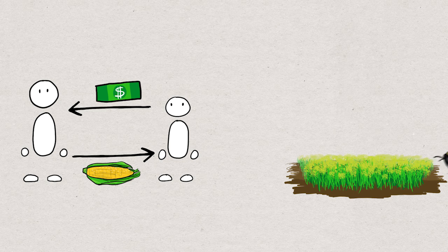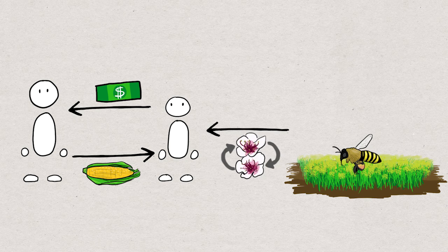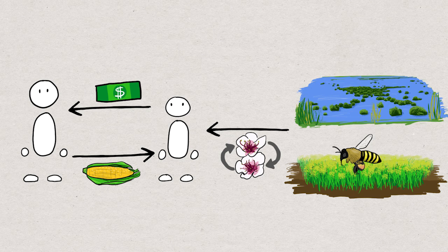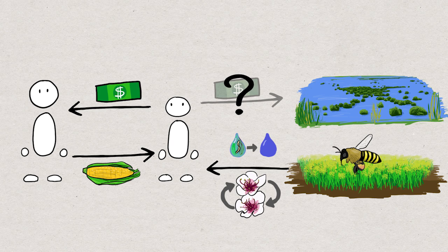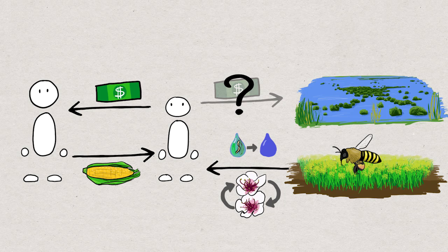For example the pollination services provided by natural pollinators, allowing certain crops to make fruits nuts or seeds. Or how about the role of a wetland in water purification. The way people trade for things is the way we measure how much people value them. So when things aren't traded we don't know how much people value them. Or at least it takes some additional work to find out. Which is the problem.